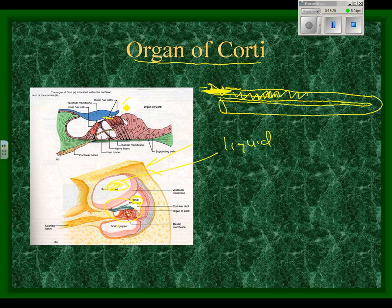They move these hair cells here in the organ of Corti. Those hair cells vibrate on the tectorial membrane and those hair cells are connected to the auditory nerve. So, the auditory nerve takes the messages as the hair cells are vibrated. That depolarizes them, sending a message down the auditory nerve.